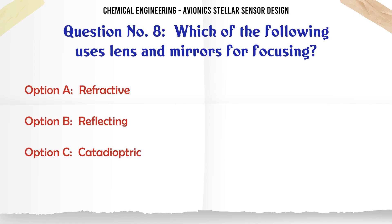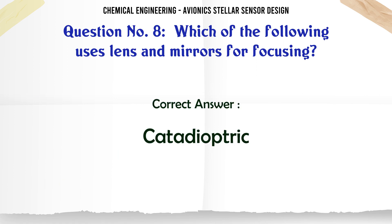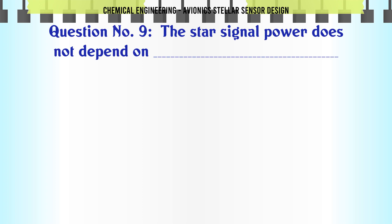Which of the following uses lens and mirrors for focusing? A. Refractive, B. Reflecting, C. Catadioptric, D. Orthogonal. The correct answer is Catadioptric.